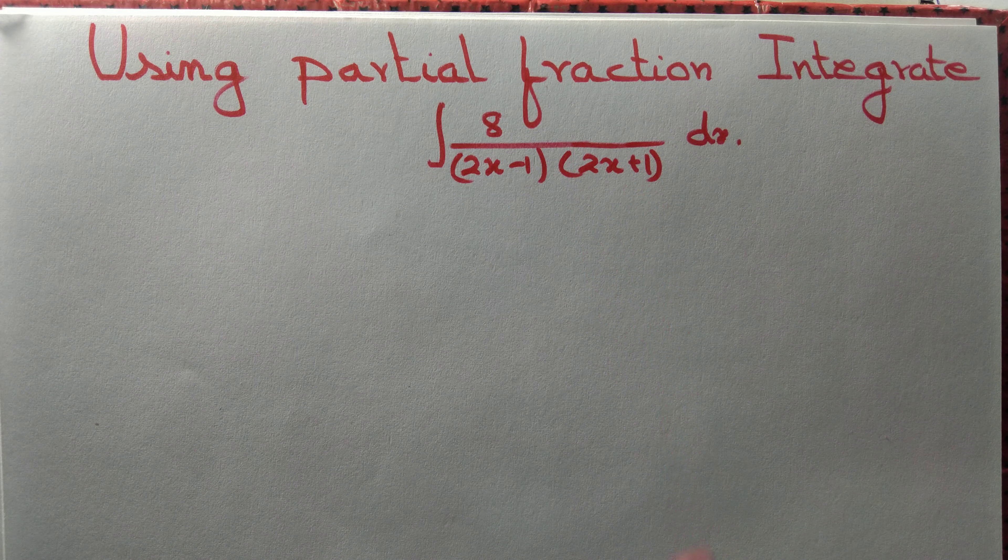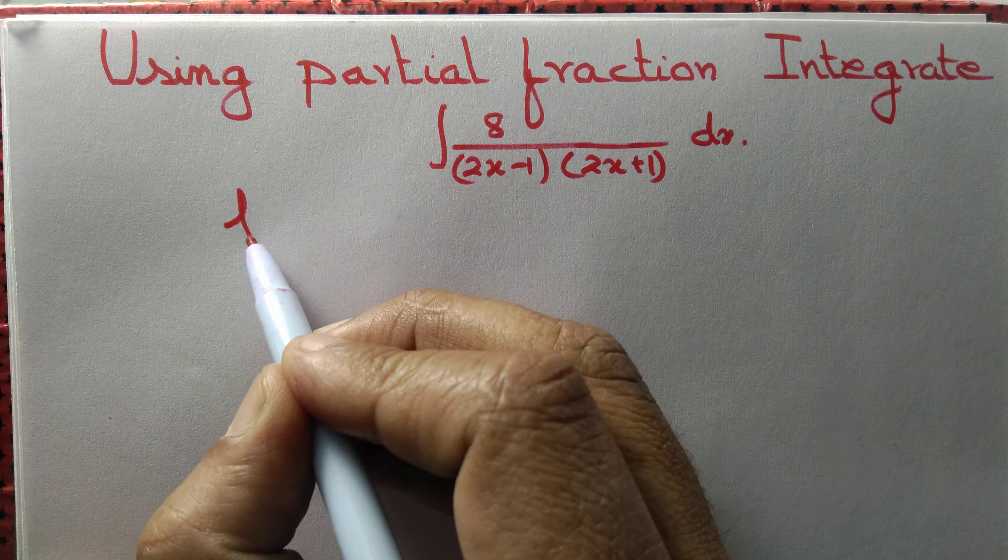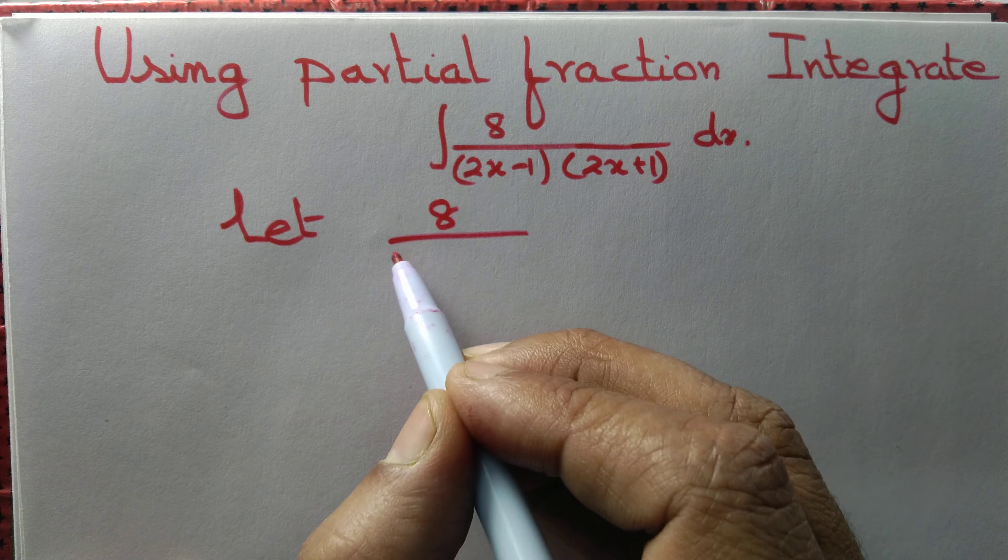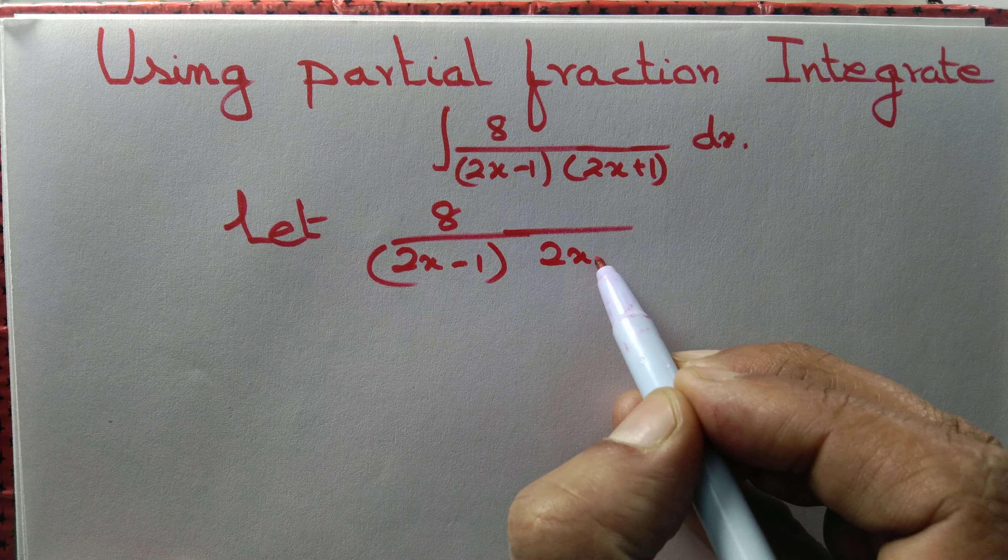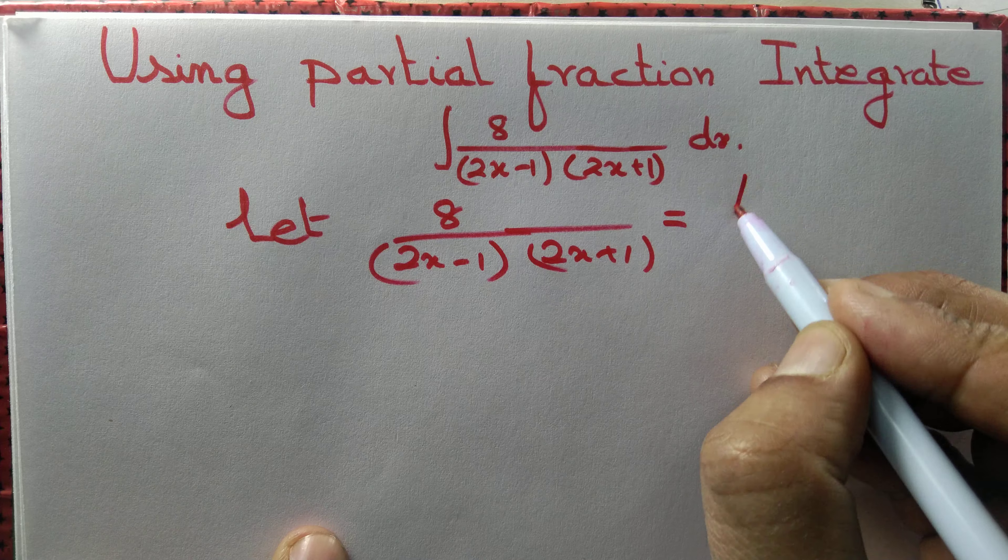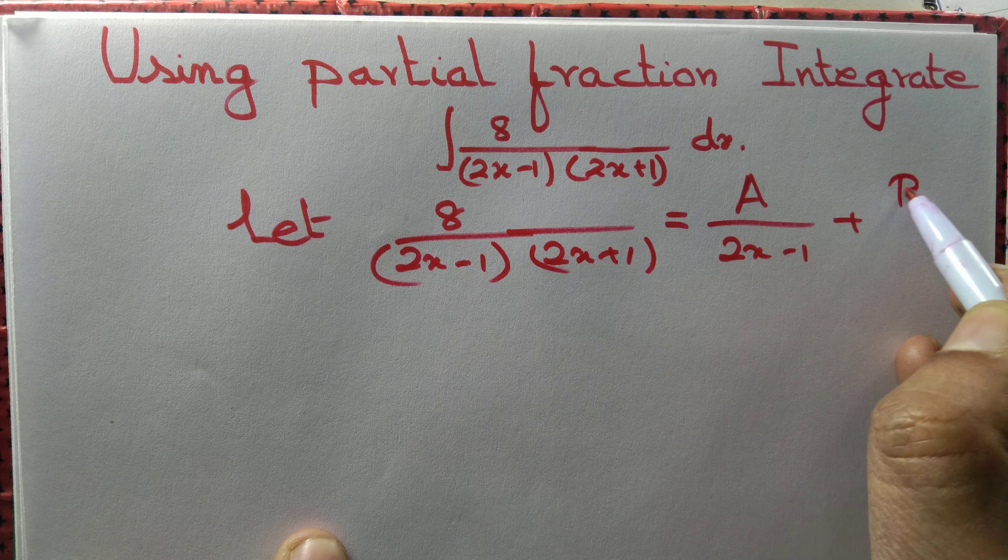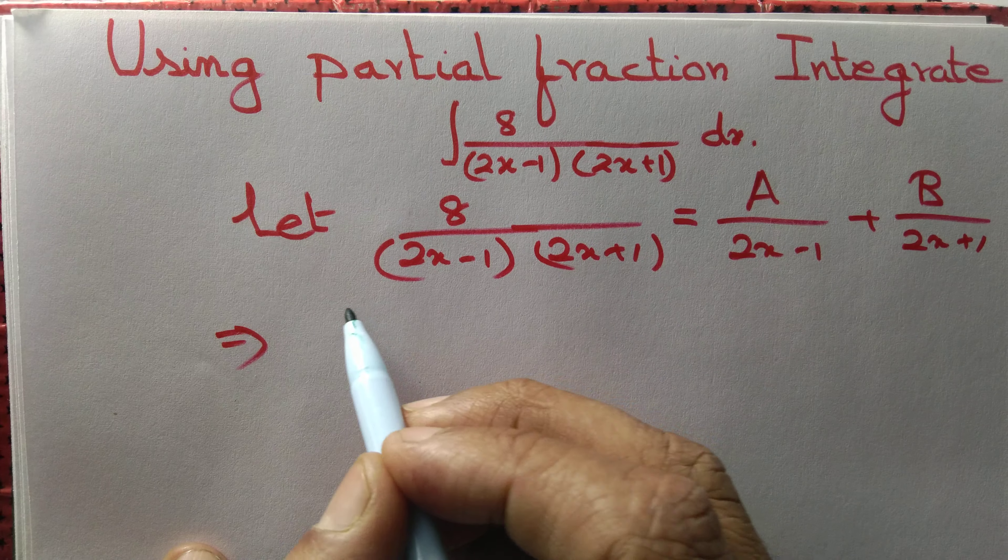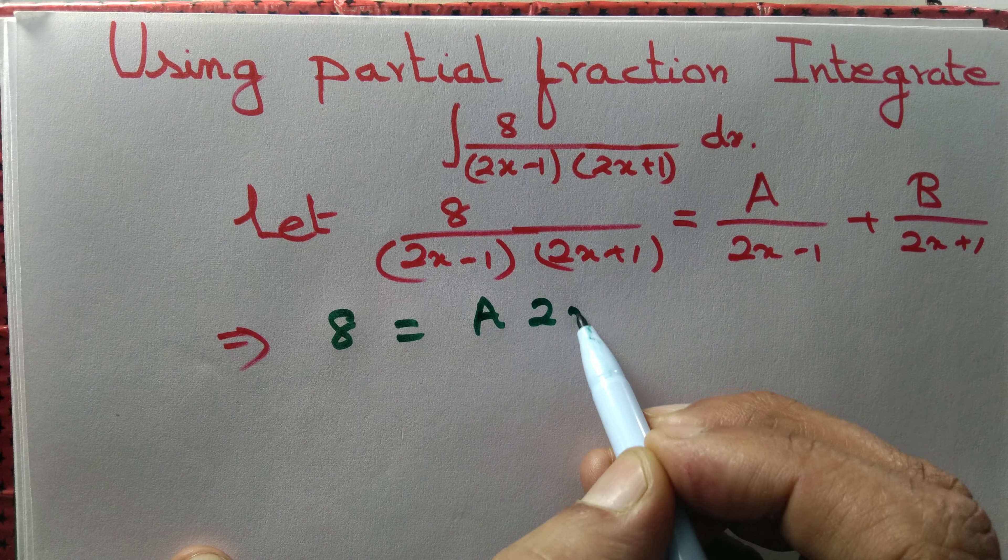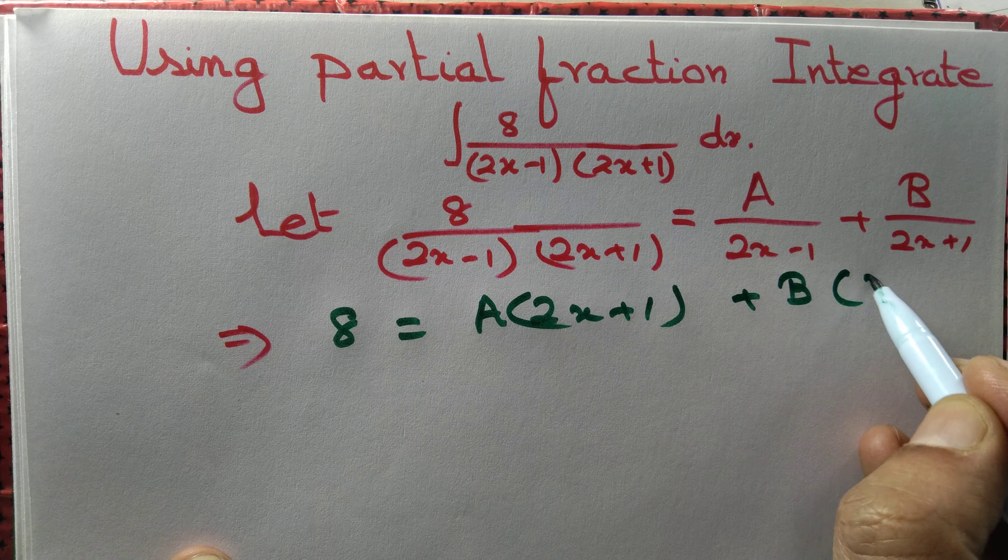Apply partial fraction method to integrate it. We start by letting 8 by 2x minus 1 whole thing into 2x plus 1 equal to a by 2x minus 1 plus b by 2x plus 1. Then 8 is equal to a into 2x plus 1 plus b into 2x minus 1.